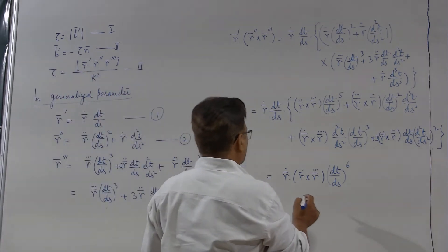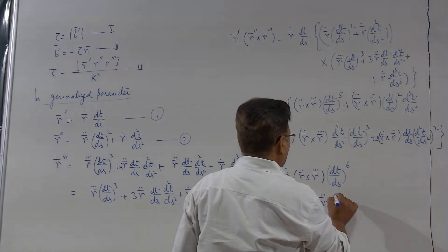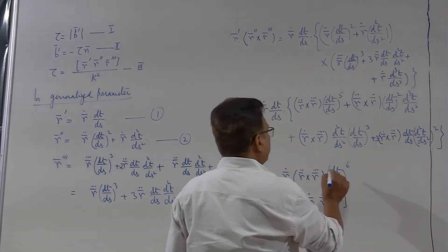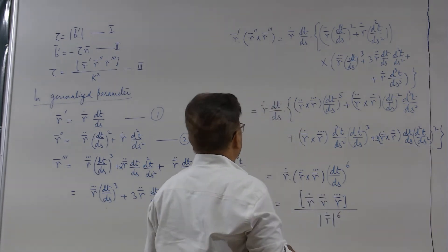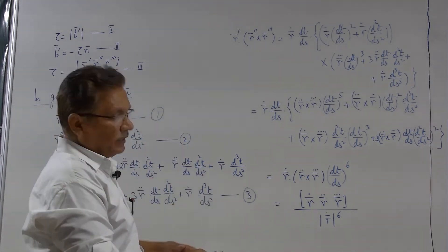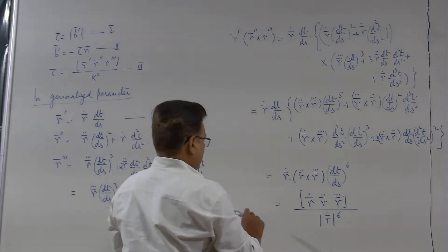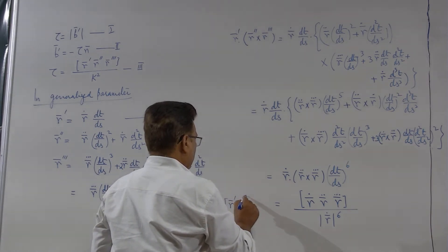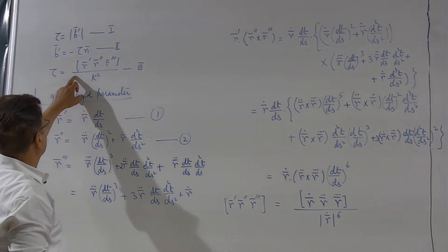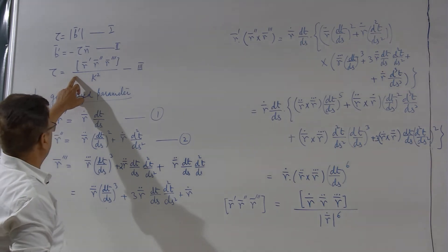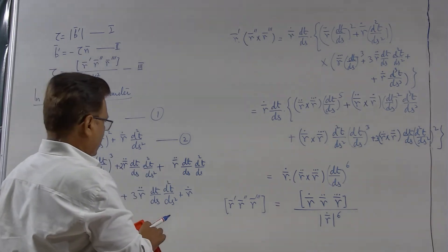We can write this as the scalar triple product [R-dot, R-double-dot, R-triple-dot] times (dt/ds)⁶. Since dt/ds equals 1 over |R-dot|, this is the scalar triple product [R-dot, R-double-dot, R-triple-dot] divided by |R-dot|⁶. This in fact equals the scalar triple product of R-dash, R-double-dash, and R-triple-dash. Hence, by formula 3, tau equals the scalar triple product [R-dot, R-double-dot, R-triple-dot] divided by |R-dot|⁶, all divided by k².